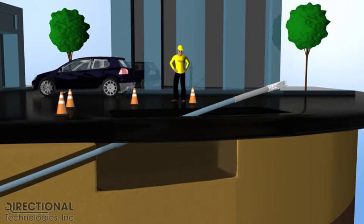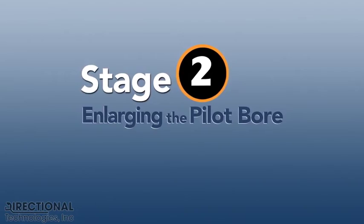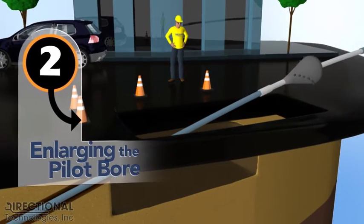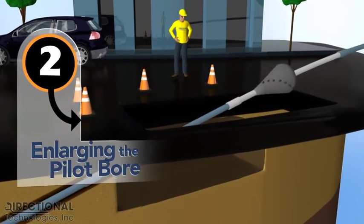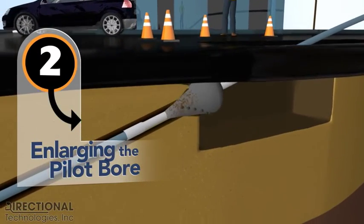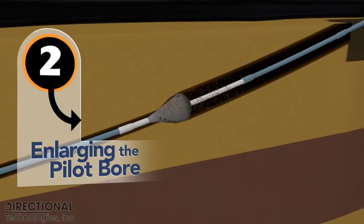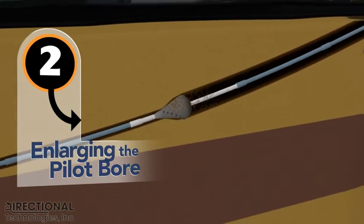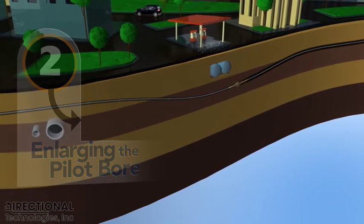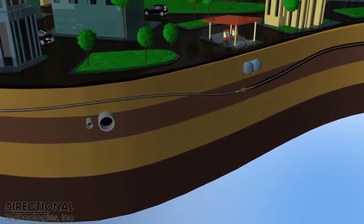A typical mid-sized directional drill uses a 4-inch drill bit to drill a pilot bore. The bore path is typically enlarged to 1.5 times the size of the conduit that is being installed. In this installation, the bore path has to be enlarged to accommodate the conduit, and a reamer is attached to cut a larger diameter hole. The reamer is simply pulled through the existing bore path to enlarge the hole.